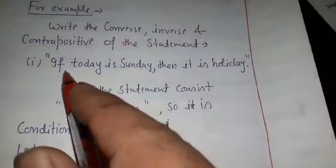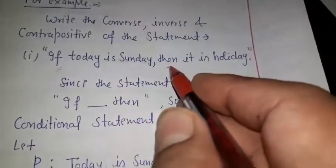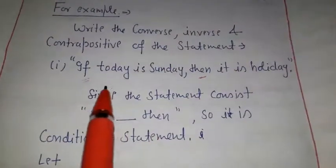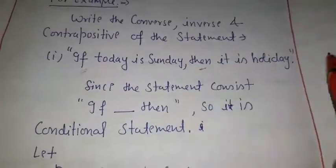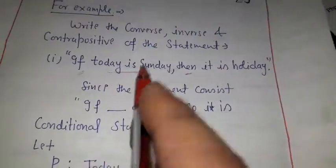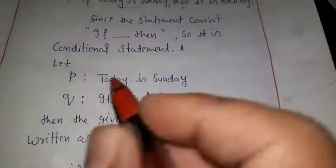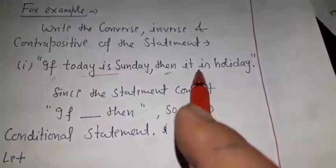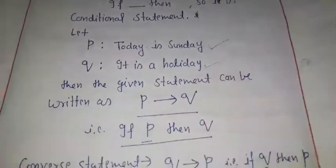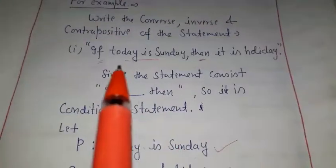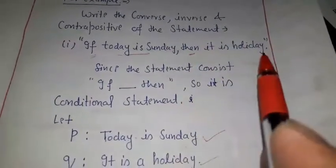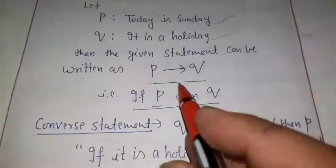Since the statement contains if-then, it is a conditional statement with two atomic propositions. Let P = 'today is Sunday' and Q = 'it is a holiday'. Then the statement 'if today is Sunday then it is a holiday' is represented as P implies Q, read as 'if P then Q'.